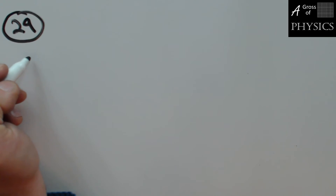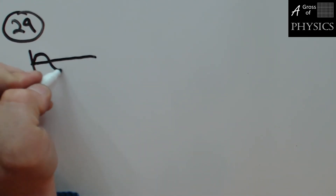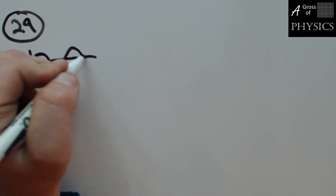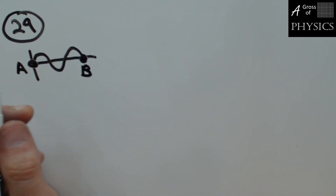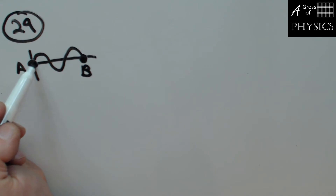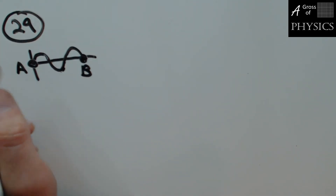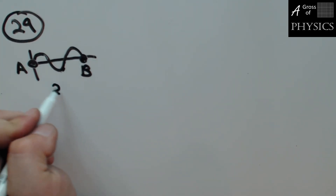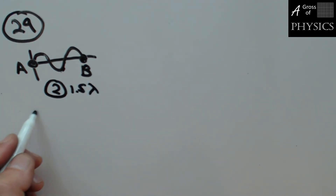Number 29 shows another waveform with points A and B. It asks how many wavelengths separate A and B. Tracing it out, it's one full wavelength plus a half. So that's choice two — 1.5 wavelengths apart.